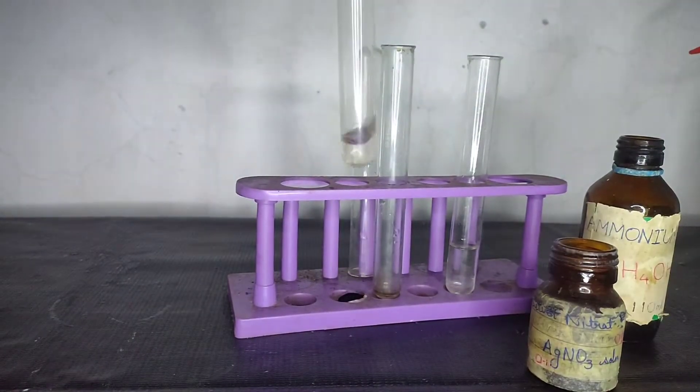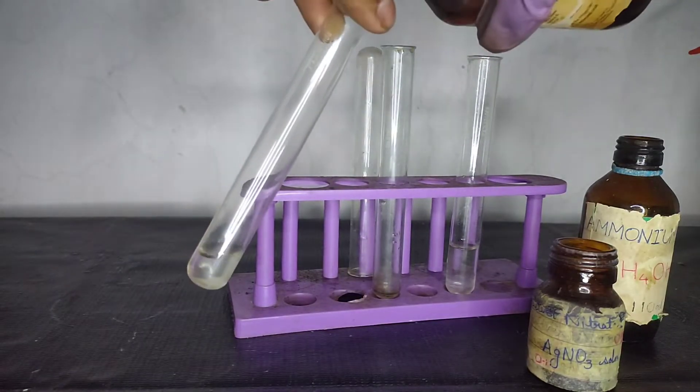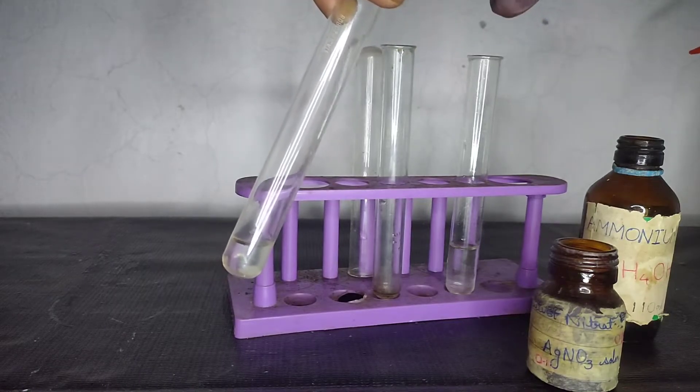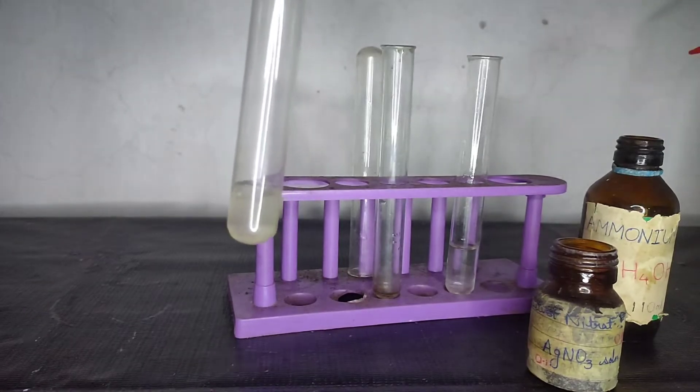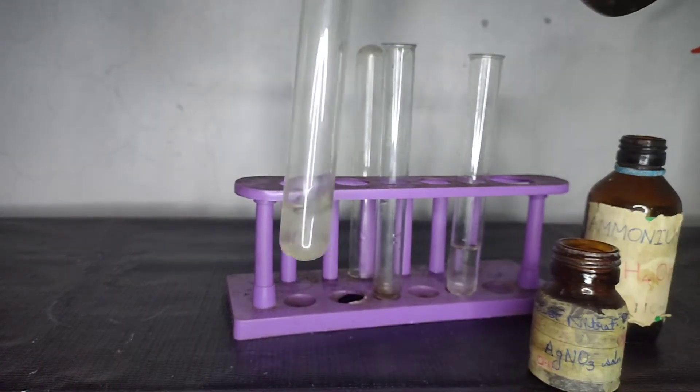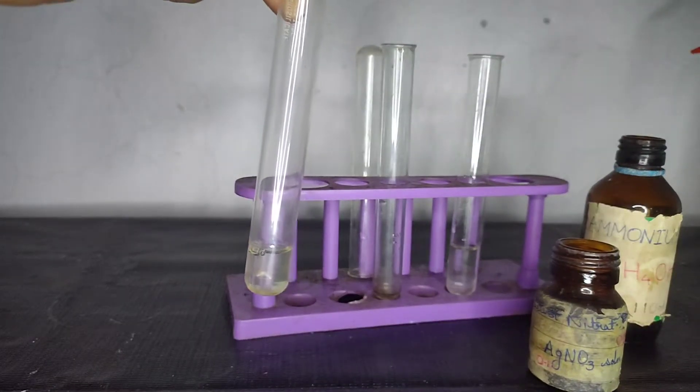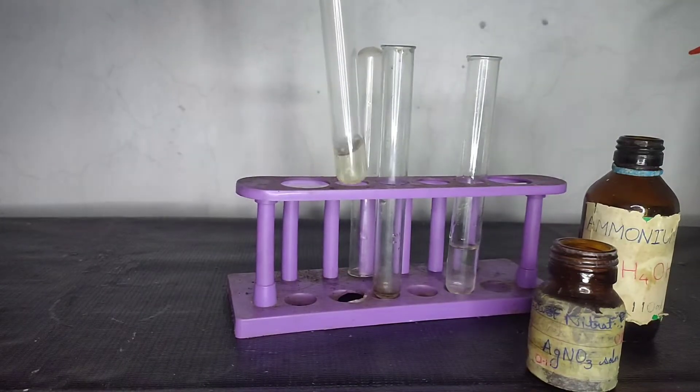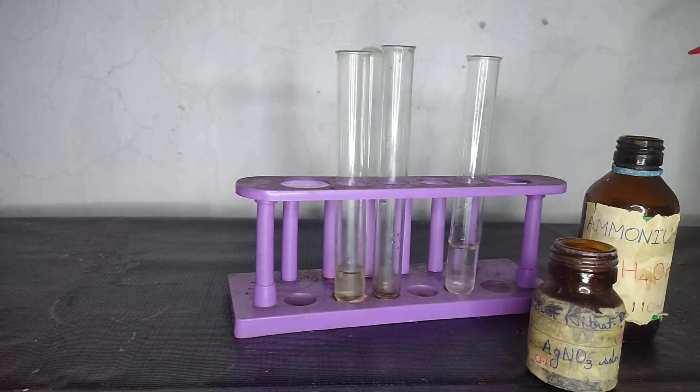Now to this solution, we first need to acidify it with dilute nitric acid. After acidification, now we need to add silver nitrate solution into this.